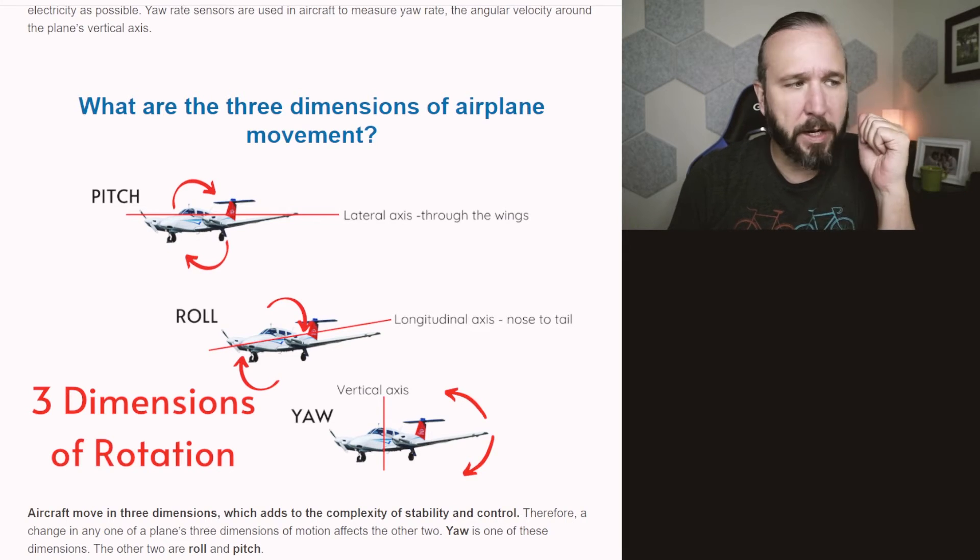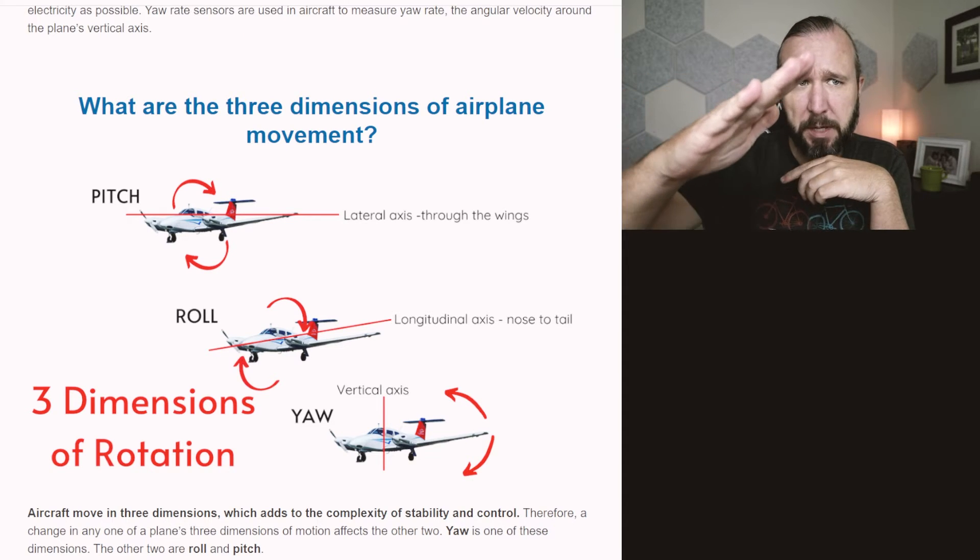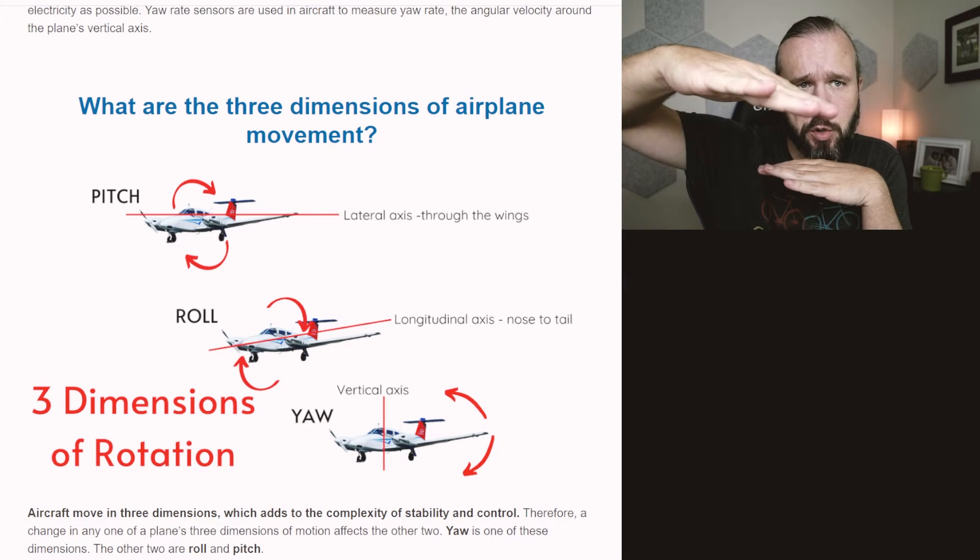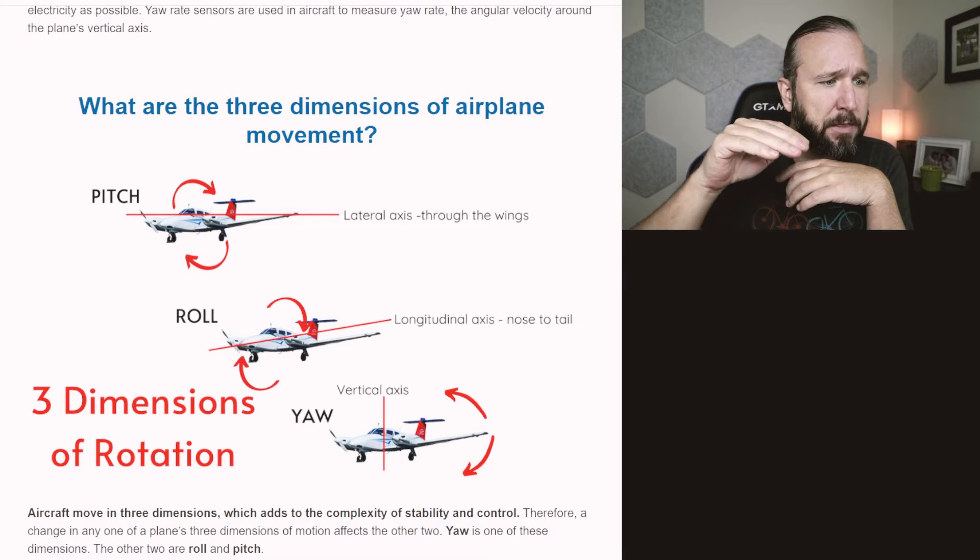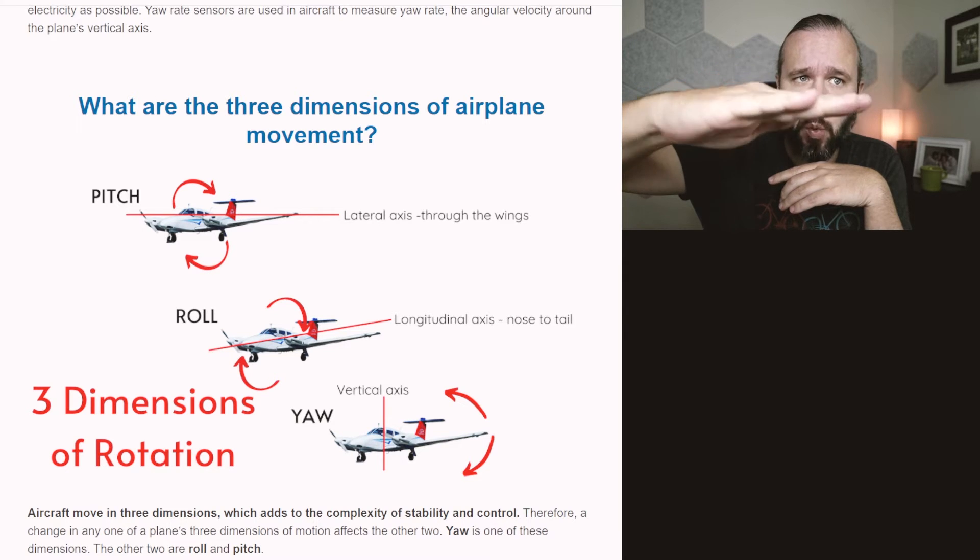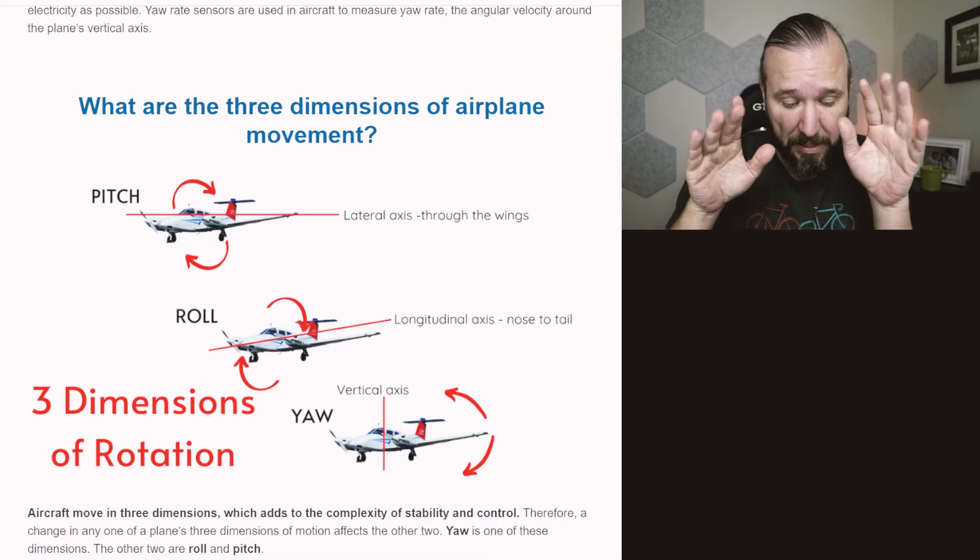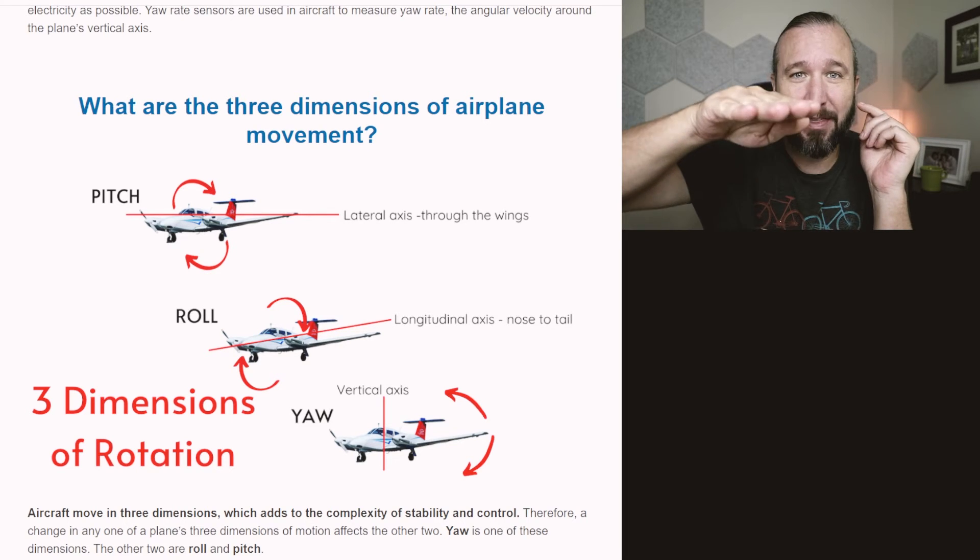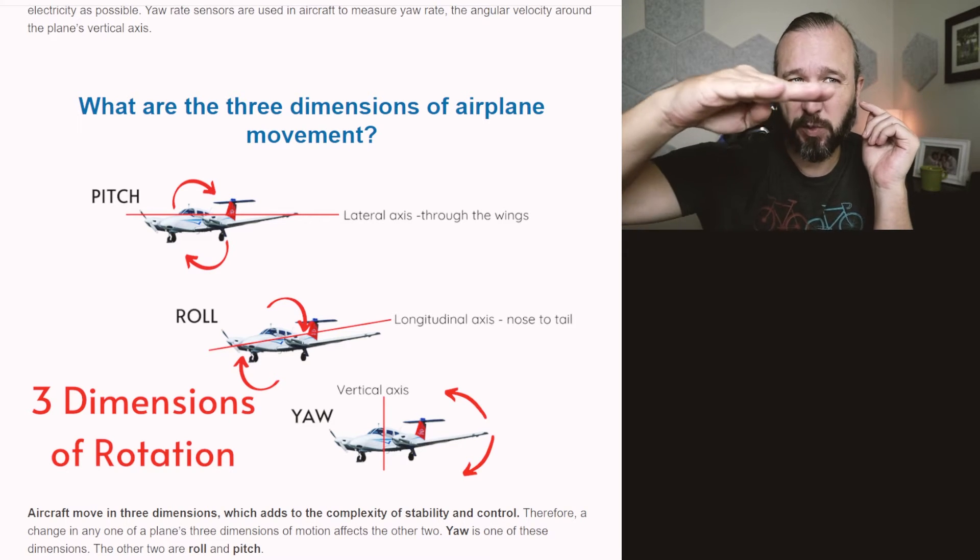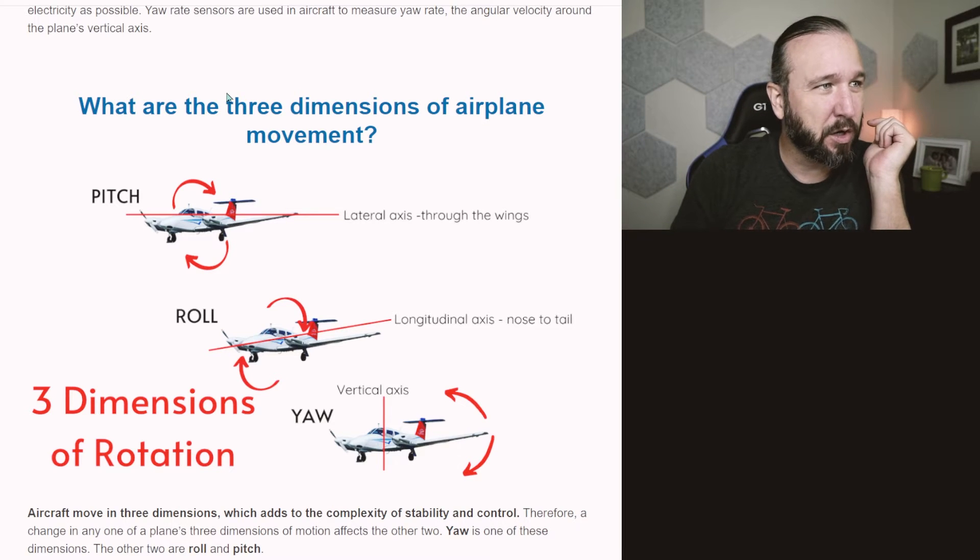So here's the different ways that airplanes can move. The first one is pitch. That's not what we're here to talk about. That's like nosing up and nosing down. The next one is roll. That's when the airplane, its wings go up or down like this. That's what we are here to talk about. That's what torsion is affected by. And the last one is yaw. That's where the airplane just kind of turns in a different direction, the same way that a car would.